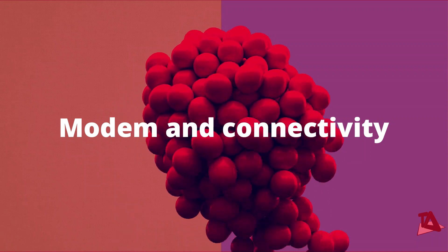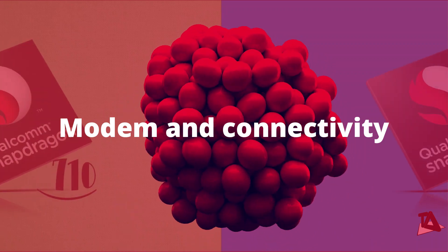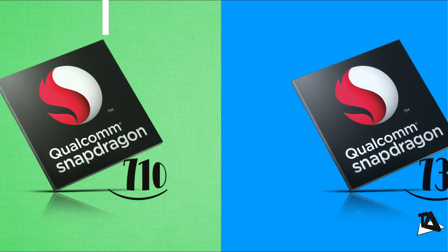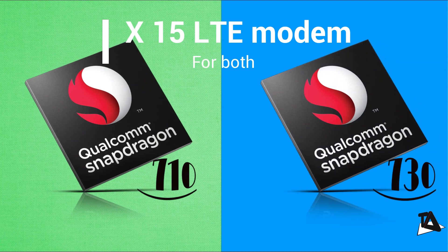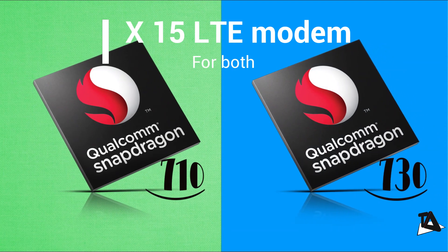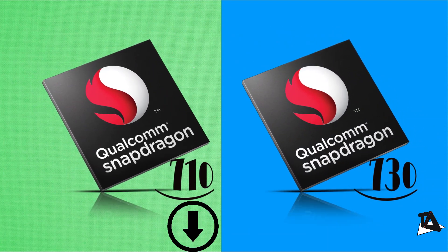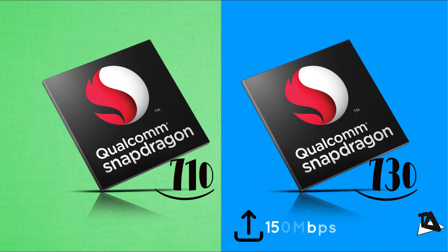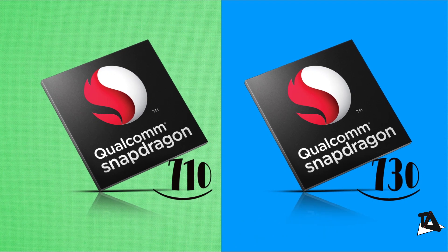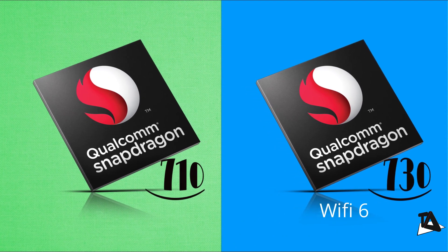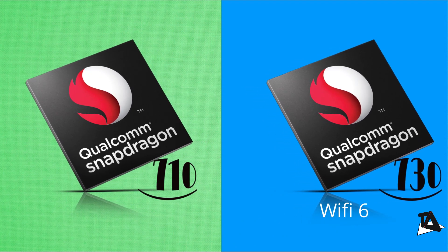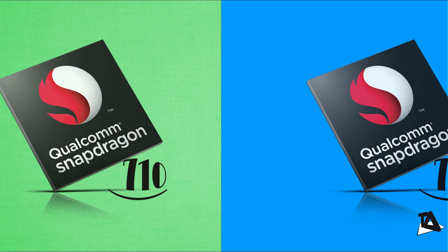Looking at modem and connectivity, both chipsets feature the same Snapdragon X15 LTE modem with download speeds up to 800Mbps and upload up to 150Mbps. However, Wi-Fi 6 is only available on Snapdragon 730 and 730G — it is not found on Snapdragon 710.